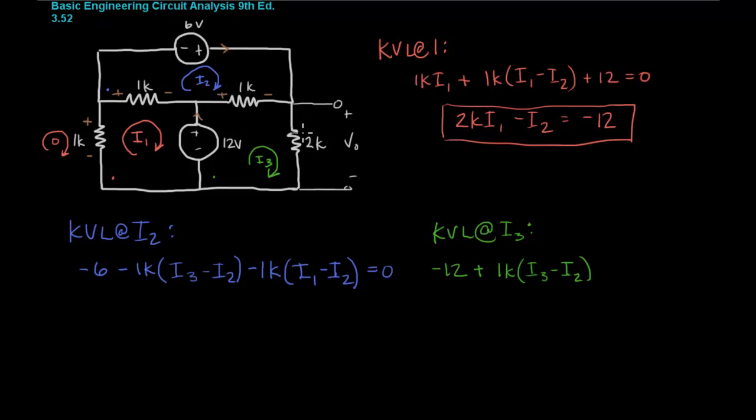Now moving along, I forgot to label this, but based on this voltage here, we'll label our current the same way. So we're entering through the positive terminal. Then we have 2K I3. And this equals zero.